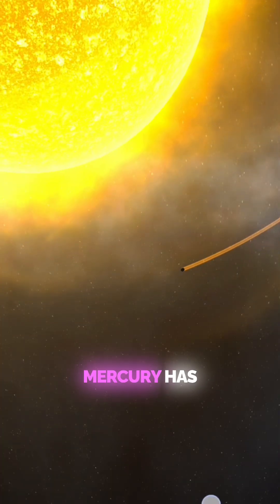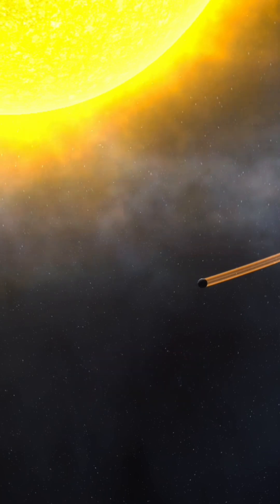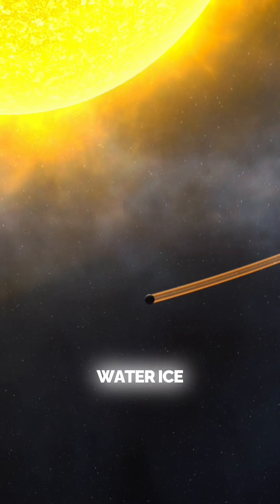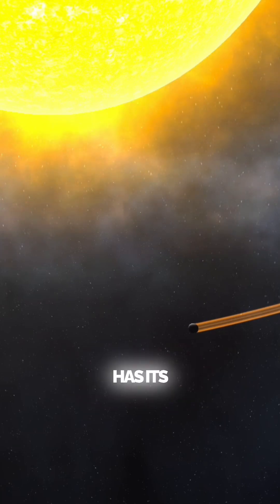4. Mercury has ice at its poles, despite being the closest planet to the Sun. Shocking, right? Mercury's poles are home to water ice hidden in craters that never see sunlight. Even the Sun's closest neighbor has its frozen secrets.